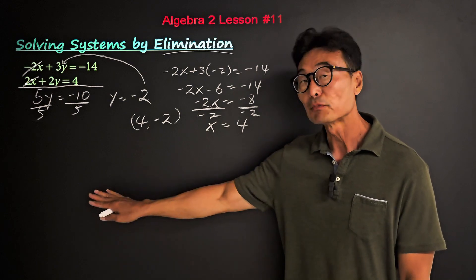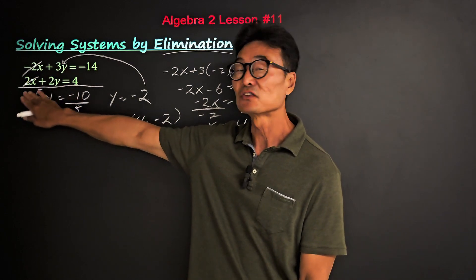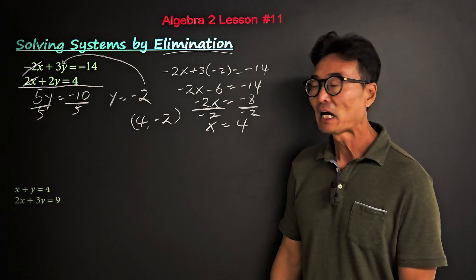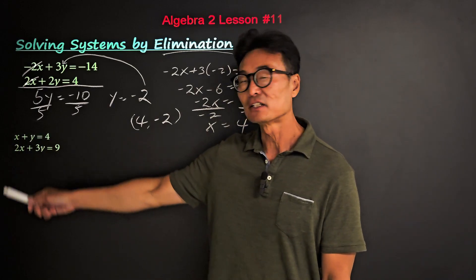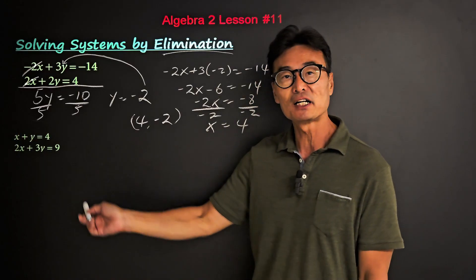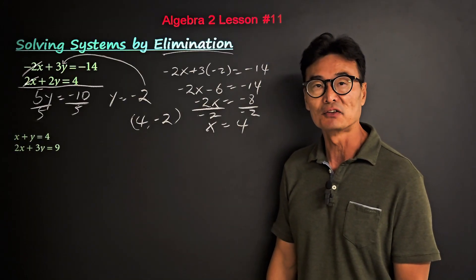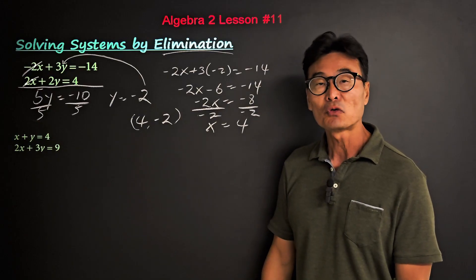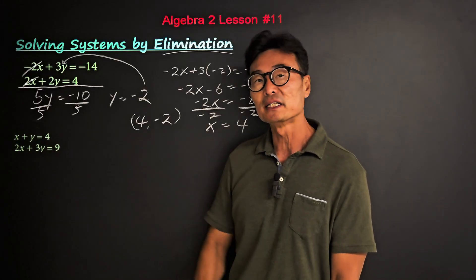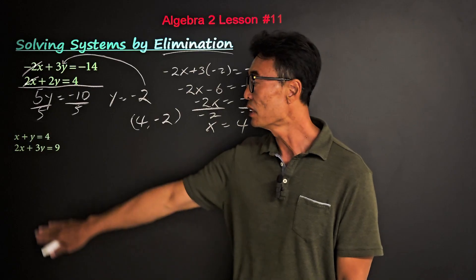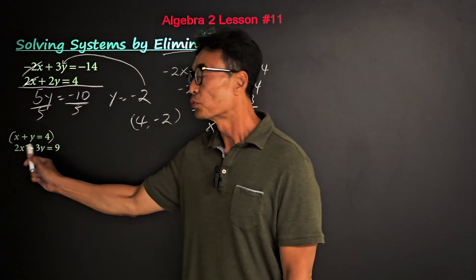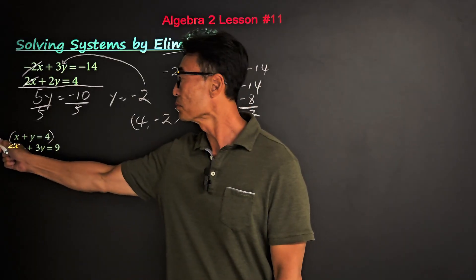In the first example we were lucky to have negative 2x and 2x cancel out. In the second example, we have x and 2x, and y and 3y, so adding up and down won't cancel either variable. To eliminate x or y, we need to multiply the first equation by negative 2 to eliminate x, or by negative 3 to eliminate y.